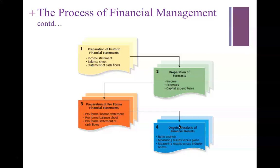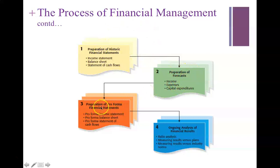The process of financial management: the first thing we do is prepare historic financial statements — income statements, balance sheets. For an established company that's been around four or five years, we prepare historic financial statements, then prepare our forecasts for next year — preparation of pro-forma financial statements — and then ongoing analysis of financial results.